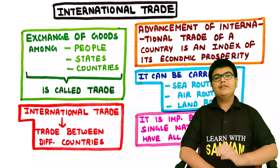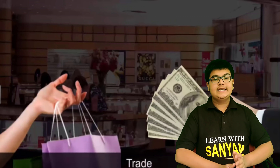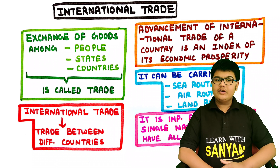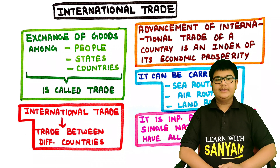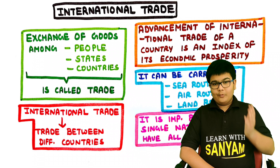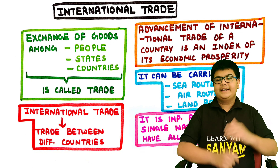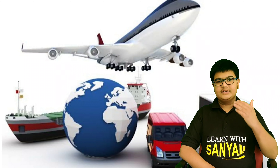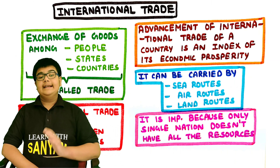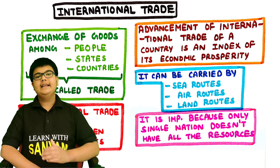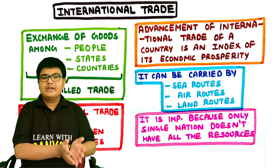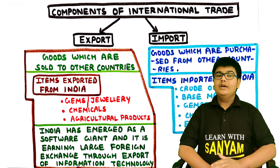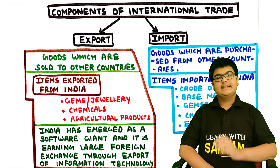Now let's discuss the last topic of this chapter: International Trade. The exchange of goods among people, states and countries is called trade. International trade is the trade between different countries. Advancement of international trade of a country is the index of its economic prosperity — the more the international trade, the more the economic prosperity. It can be carried out using sea routes, air routes and land routes. It is important because a single nation doesn't have all the resources. International trade has two components: export and import.